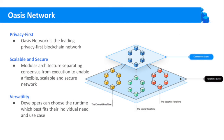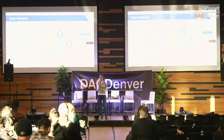Currently we have three official runtimes on our network. There is the EVM compatible network, there is a confidential EVM network — which is the star of the day — and the third is the WebAssembly-compatible runtime, which is more for non-EVM, WebAssembly, and Rust developers.